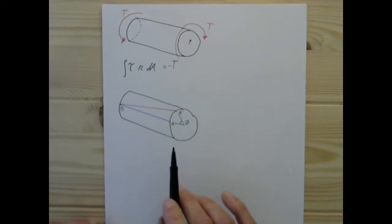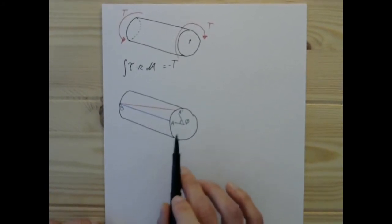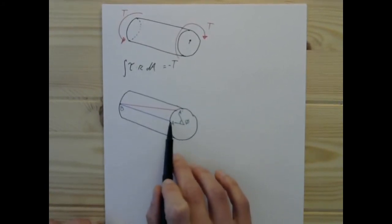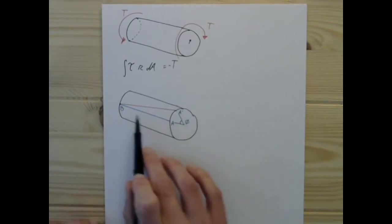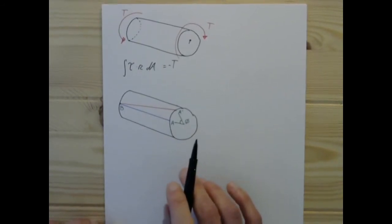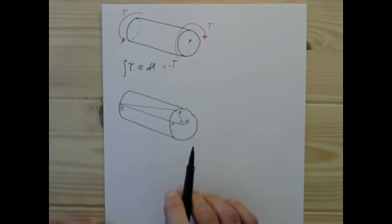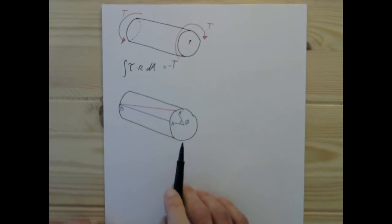So all it's going to experience is shear, as each individual slice of the bar attempts to slide past and rotate relative to the slices, the elements next to it.